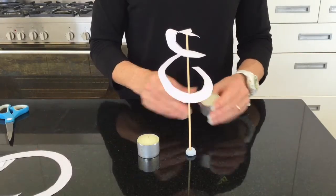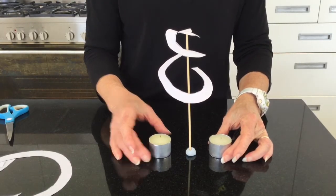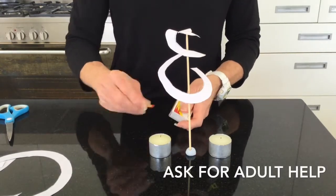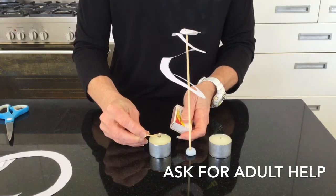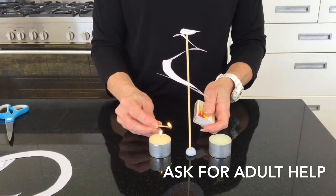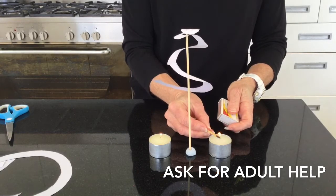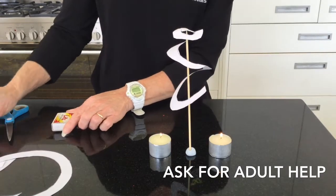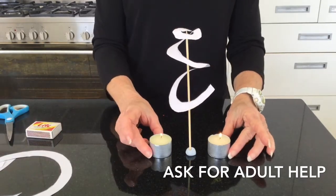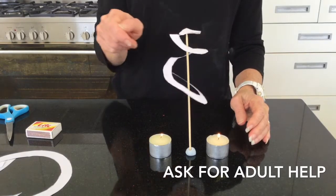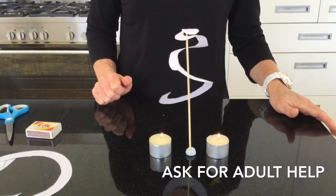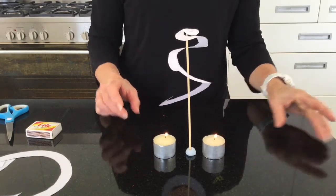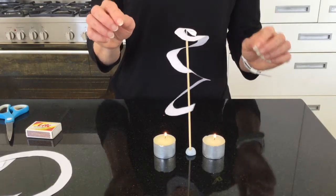Now we're going to place our tea lights side aside. An adult to help you light the tea lights. Then put the tea lights on at the top.